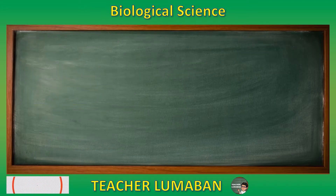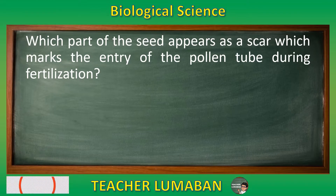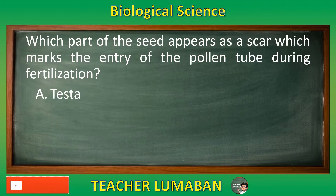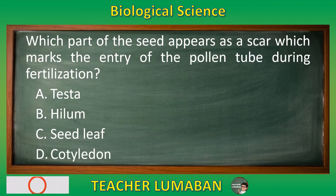Which part of the seed appears as a scar which marks the entry of the pollen tube during fertilization? Letter A: Testa. Letter B: Hylum. Letter C: Seed Leaf. Letter D: Cotyledon.